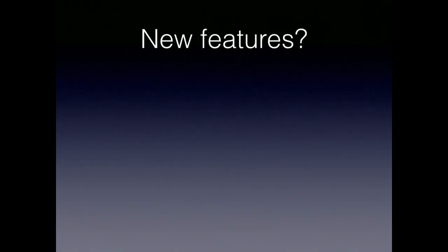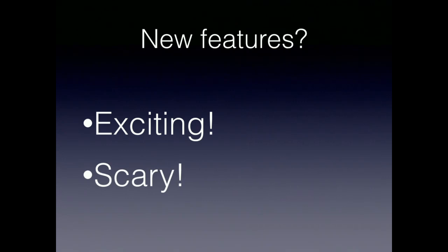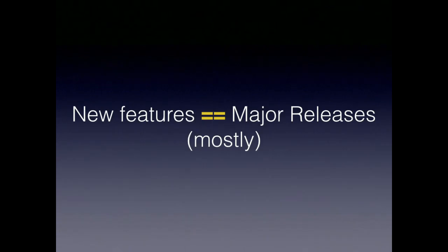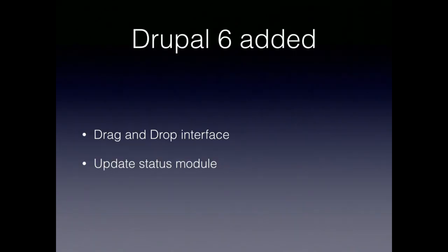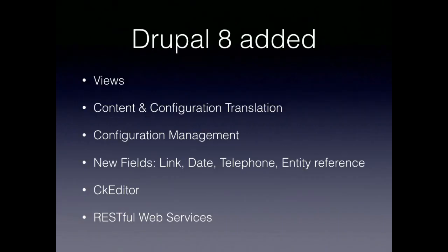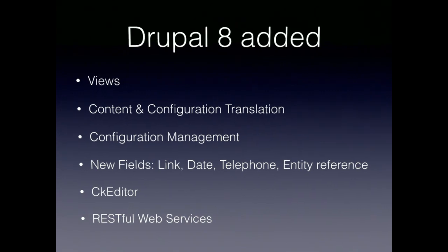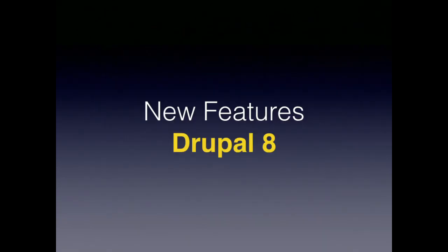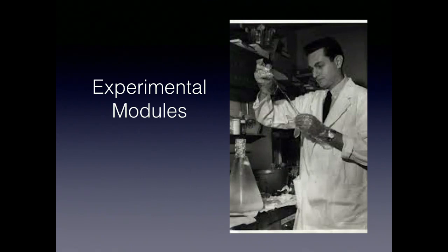Let's talk about new core features. New features are exciting, potentially scary — new bugs and new features. New features before Drupal 8 usually went along with major releases. Drupal 6 added the drag-and-drop interface and the update status module. Drupal 7 added custom fields (what used to be CCK), the overlay module, and image styles. Drupal 8, in those 49 months, brought views, content and configuration translation, configuration management, and CKEditor. New features in Drupal 8 introduce the idea of experimental modules.